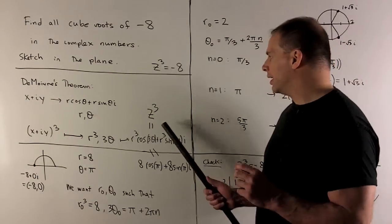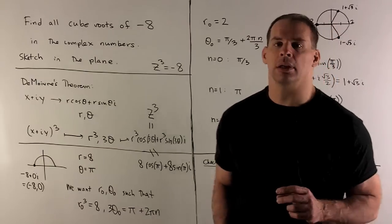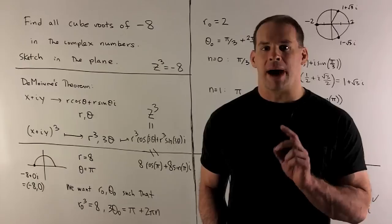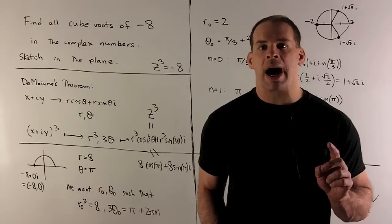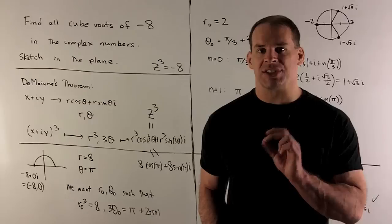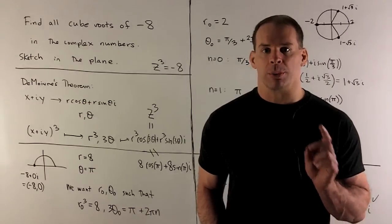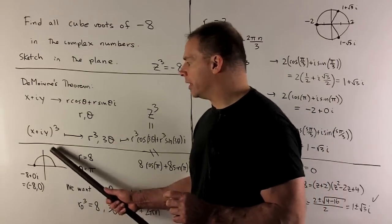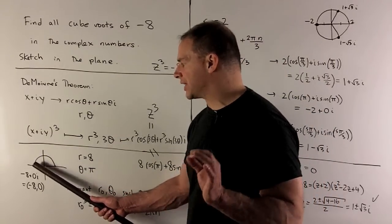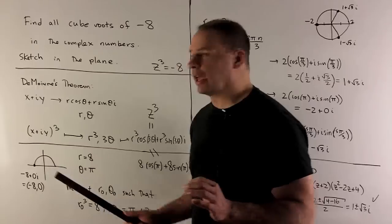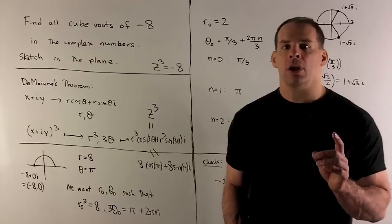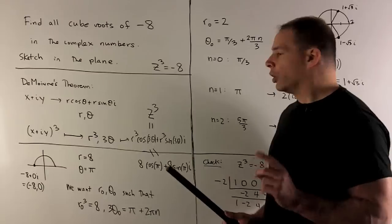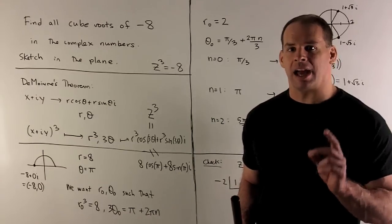In our case, we're using power equal to 3. It sends r to r cubed and theta to 3 theta. The complex number we get is r cubed cosine 3 theta plus r cubed sine 3 theta times i — that's our z cubed. Now, minus 8 in complex form is minus 8 plus zero i, the point (minus 8, 0). In polar coordinates, r equals 8 and theta equals pi.